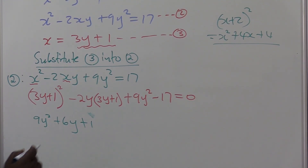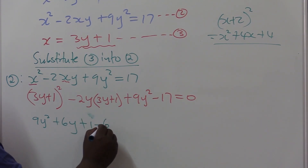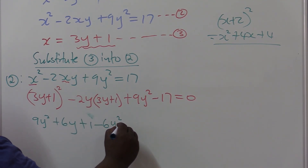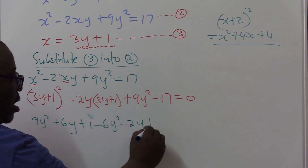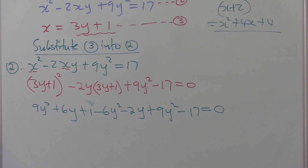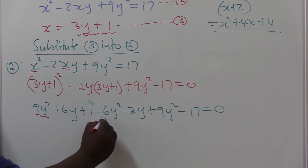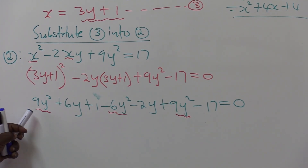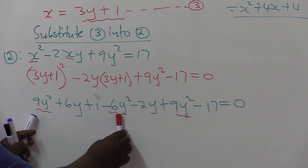Moving on to the next bracket: negative two y times positive three y gives minus six y squared, and negative two y times positive one gives minus two y. One is the identity element for multiplication so it gives the same thing. Then we still have plus nine y squared, minus 17, equals zero. Now let's simplify and clean it up.